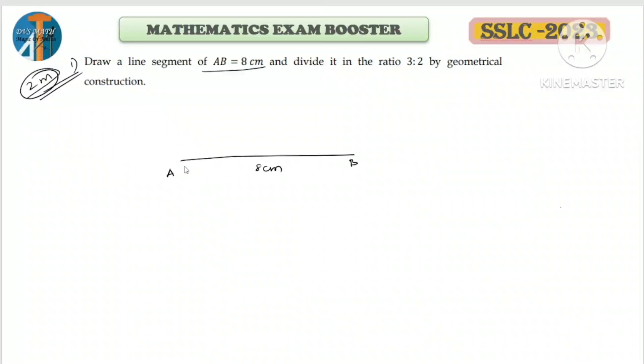Then draw an acute angle - an angle measuring less than 90 degrees. For the ratio 3:2, add 3 plus 2 to get 5. Divide it into 5 equal parts using your scale, either 1 cm or 2 cm intervals. Mark them as 1, 2, 3, 4, 5.